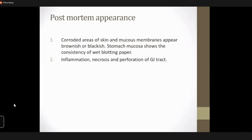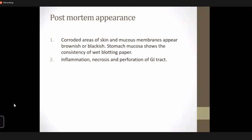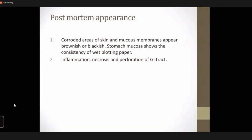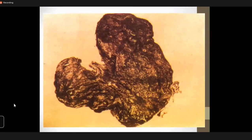The stomach is converted into a soft, boggy, black mass in case of sulfuric acid — it has the consistency of wet blotting paper. It will be blackish, charred, and give a peppery feeling to the hands. Perforation is also most commonly seen with sulfuric acid poisoning. The stomach lining is charred, blackened, and very dry in appearance with a peppery feeling.